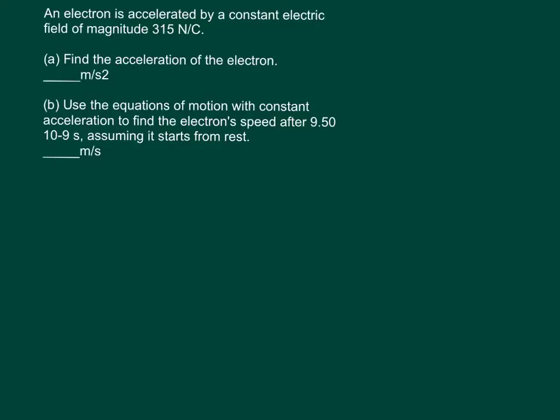The question says an electron is accelerated by a constant electric field at a magnitude of 315 newtons per coulomb. Part (a) asks to find the acceleration of the electron, and part (b) asks to use the equation of motion with constant acceleration to find the electron's speed after 9.5 times 10 to the negative 9 seconds, assuming it starts from rest. So the first thing it asks us for is the acceleration.